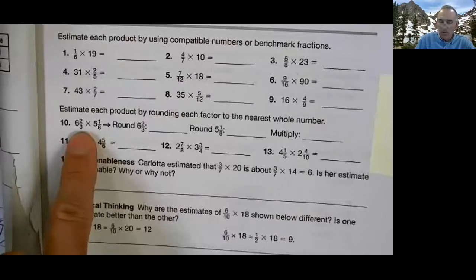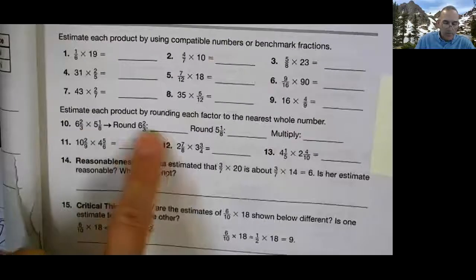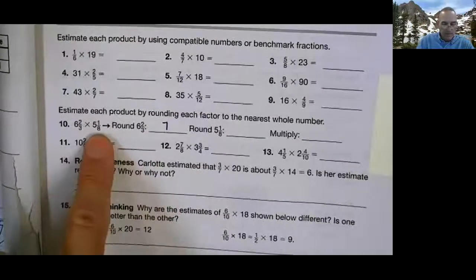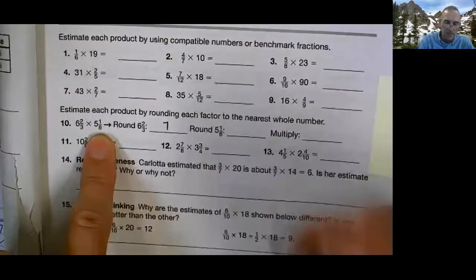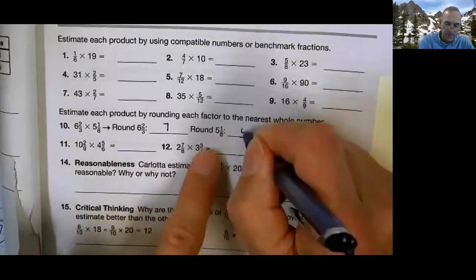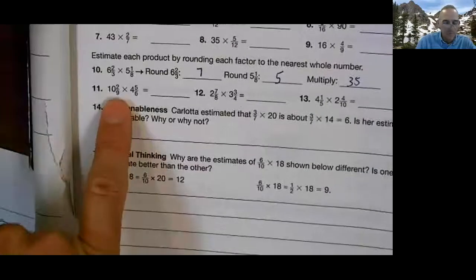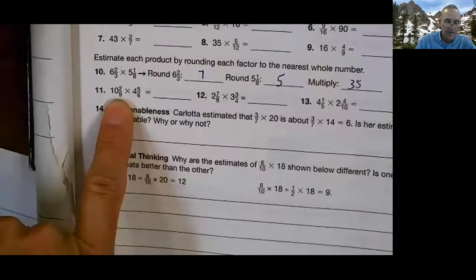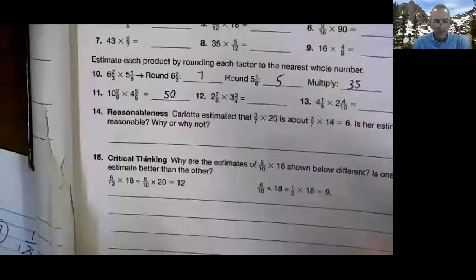Six and two-thirds. So that looks like seven. So I would round that to seven. This number here also appears right there. Five and one-eighths. Nearest whole number. If I round it, it looks to be there. Multiply. 35. Round to the nearest whole number. So what would this be? Rounding to the nearest whole number. This would be 10 times 5 is 50.